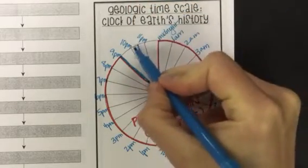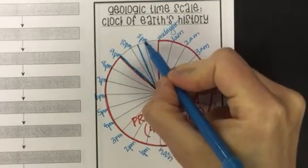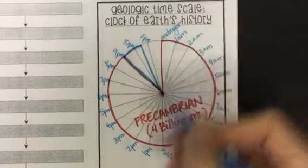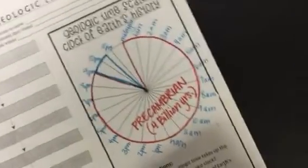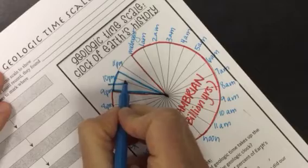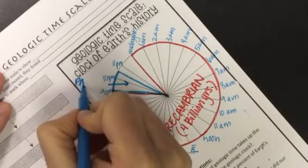So you're going to cut the chunk between 10 p.m. and 11 p.m. in half there. So this chunk here, this is going to be Paleozoic. So I'm going to turn this a little bit and just draw my arrow there. This is going to be Paleozoic.